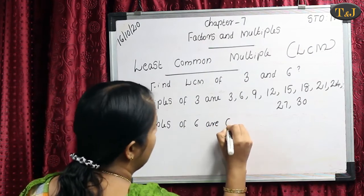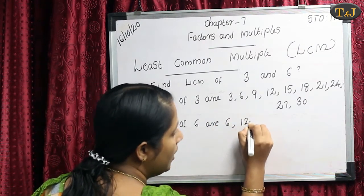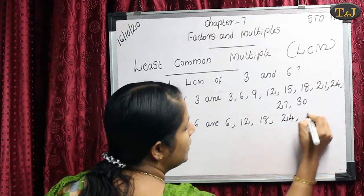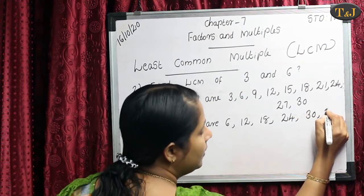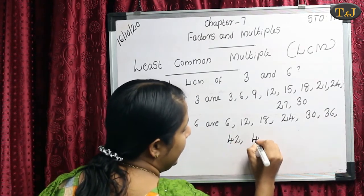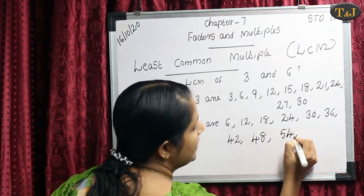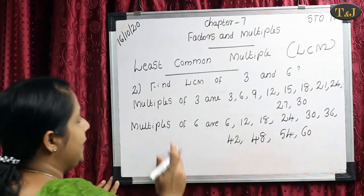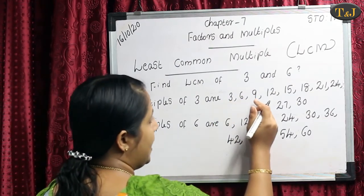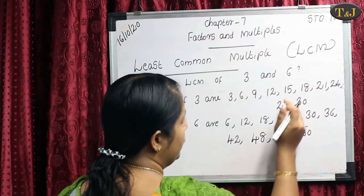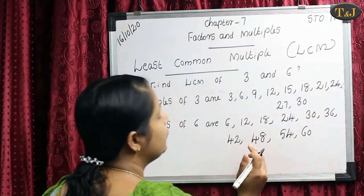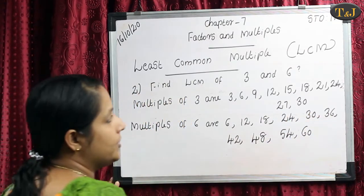3×1=3, 3×2=6, 3×3=9, 3×4=12, 3×5=15, 3×6=18, 3×7=21, 3×8=24, 3×9=27, 3×10=30. Then write multiples of 6: 6×1=6, 6×2=12, 6×3=18, 6×4=24, 6×5=30, 6×6=36, 6×7=42, 6×8=48, 6×9=54, 6×10=60. We now have both multiples of 3 and 6.